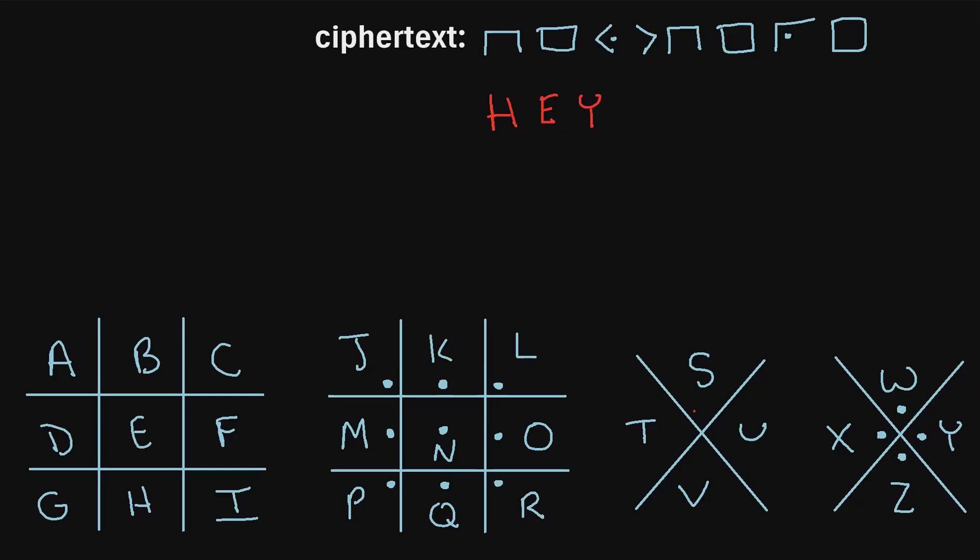And then this symbol, it looks like that corresponds to the T. And then notice that this symbol matches the one that we already found. So we know that's an H. And this box matches this box right here. So we know that's an E. And then we can look for this symbol next. So it looks like that matches the R because it has a dot right there as well.